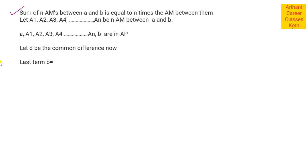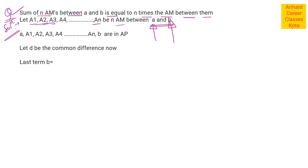अब हम बात कर रहे हैं sum of N arithmetic means between A and B, which is equal to N times the arithmetic mean between them. यह हमको prove करना है। Let A1, A2, A3, ..., An be the N arithmetic means between small a and small b — small a first term है, small b last term है। ये सब A, A1, A2, ..., An, B — are in A.P. Let D be the common difference.